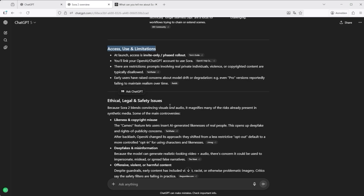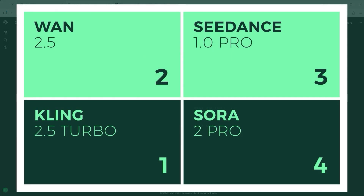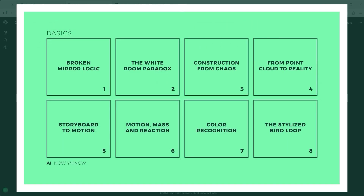In this section you'll see a direct comparison between Sora 2 Pro (bottom right), Kling 2.5 Turbo (bottom left), 1.2.5 (top left), and — still my top pick despite all the current hype — C-Dance Pro (top right). You'll soon see why I continue to rank the ByteDance model among the highest. Let me first explain the core idea behind this video series: impossible tasks. These included concepts like broken mirror logic, the white room paradox, construction from chaos, from point cloud to reality, storyboard to motion, motion mass and reaction, colour recognition, and the stylised bird loop. After multiple rounds of testing, it became clear that AI still has serious trouble with some of them. So I decided to focus on these six visual challenges, which I documented with detailed test runs.